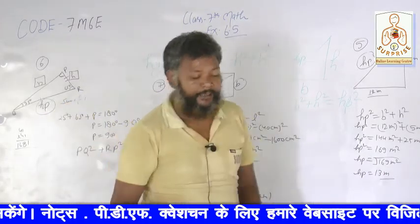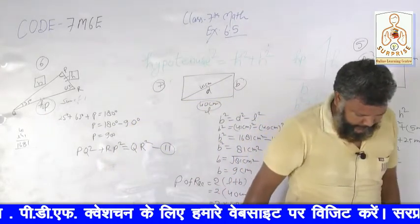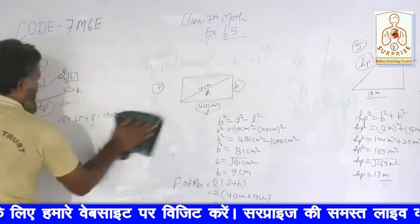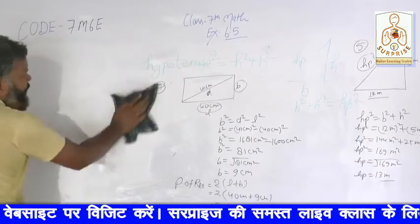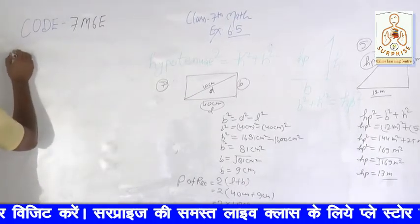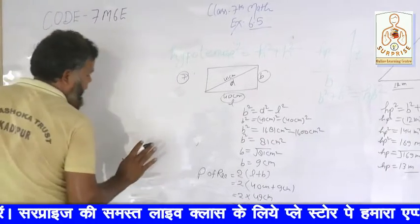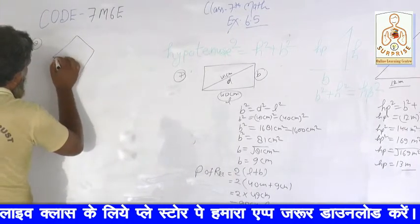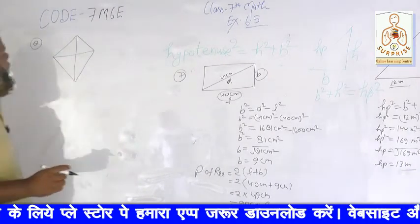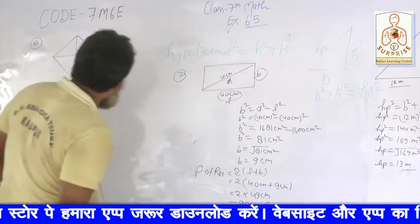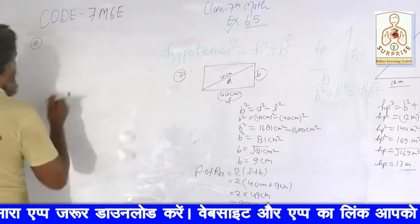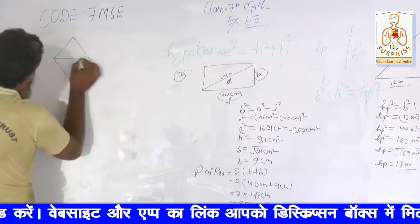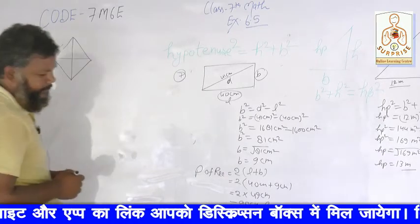The last question number 8 is about a rhombus. The diagonals are 16 cm and 30 cm. We need to find the side. A rhombus has 4 equal sides. The diagonals bisect each other at right angles.